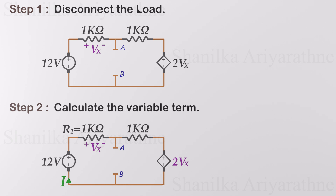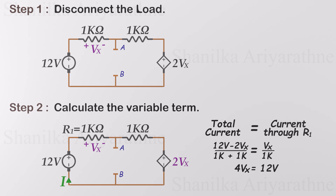Since the circuit contains only one loop, the current flowing through the circuit is the same for each component in the loop. The total current flowing through the circuit equals the current through R1 and any other resistors in the loop. Using this relationship, we can calculate the value of the variable. Vx is equal to 3 volts, so the voltage supplied by the variable source is 6 volts.